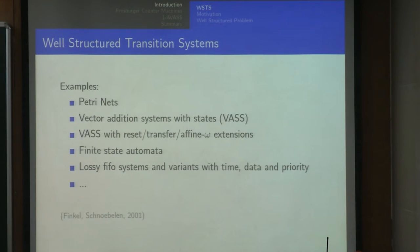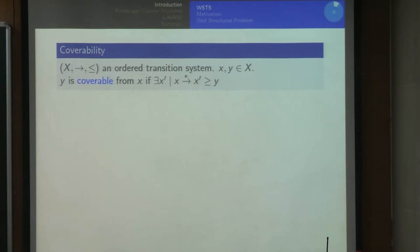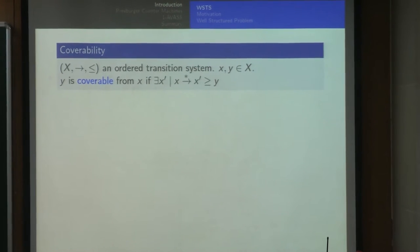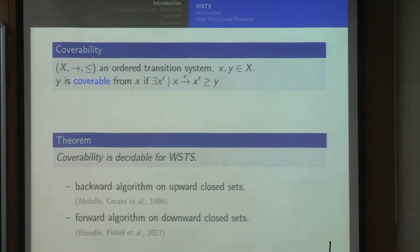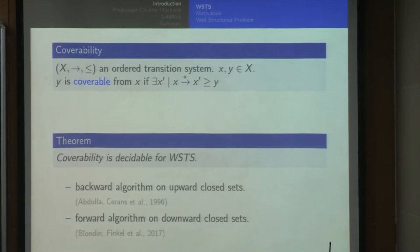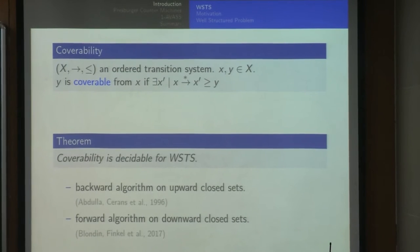This is quite a robust class of transition systems. Petri nets and vector addition systems can all be seen as WSTS under appropriate orderings. The reason this is studied is because the coverability problem is decidable on WSTS. The coverability problem asks: given two configurations, can you go from one to some configuration which is bigger than the other? There is a backwards algorithm from 1996 and a more recent forward algorithm on downward closed sets from 2017.